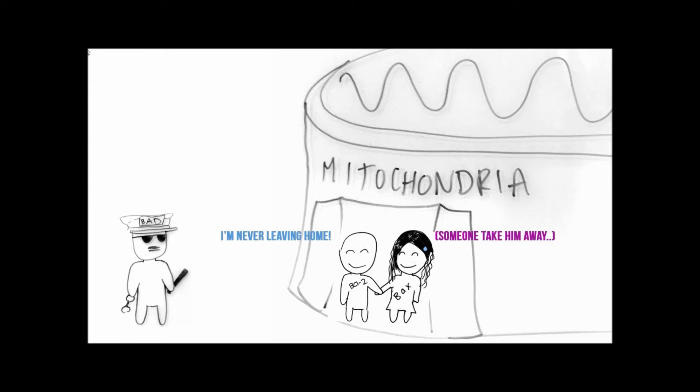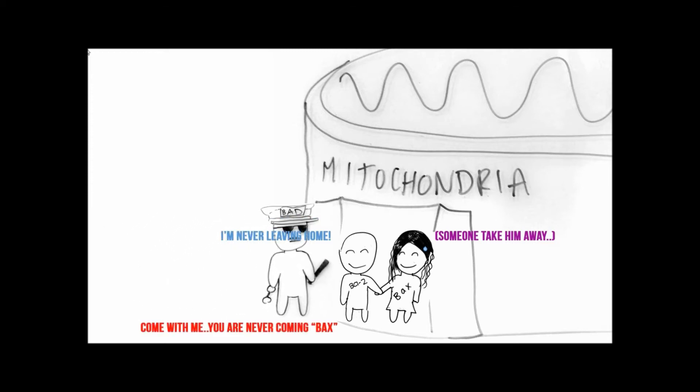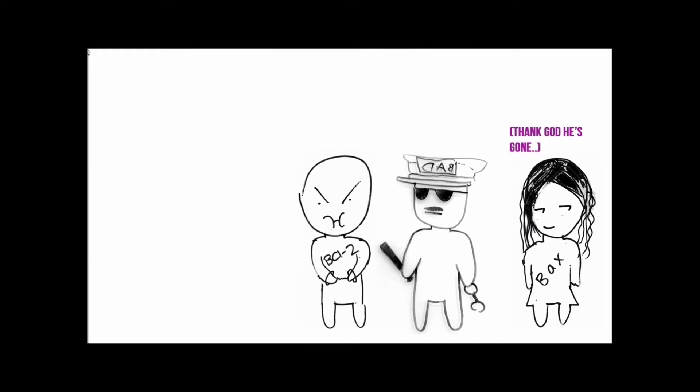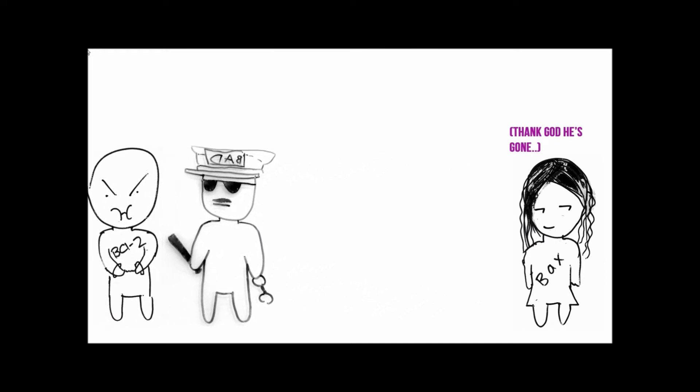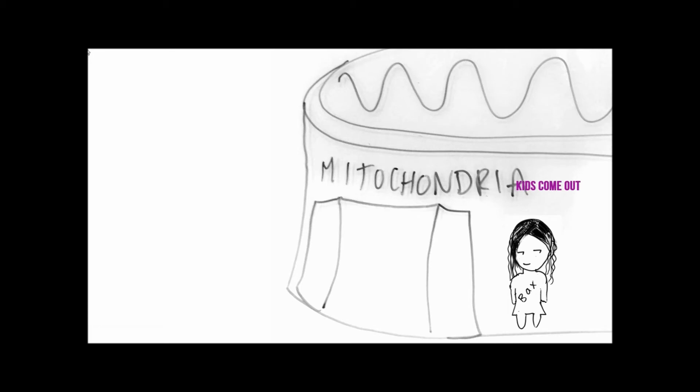When stimulated by DNA damage, apoptotic signals upregulate the BAD pro-apoptotic protein. BAD binds to BCL2, an anti-apoptotic protein on the BCL2-BAX complex present in the mitochondrial membrane. The release of BCL2 from the complex results in the formation of a permeability pore in the outer mitochondrial membrane.